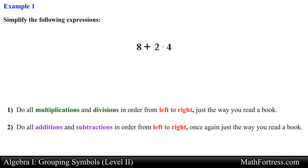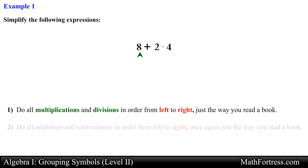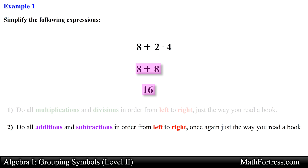We first need to take care of multiplication or division operators, and then after that we take care of any subtraction and addition operators. Scanning the expression from left to right, there's an addition operator so we skip it for now, and right next to it there is a multiplication operator. So we simplify 4 times 2 which equals 8, and then we add 8 to that which reduces to 16.